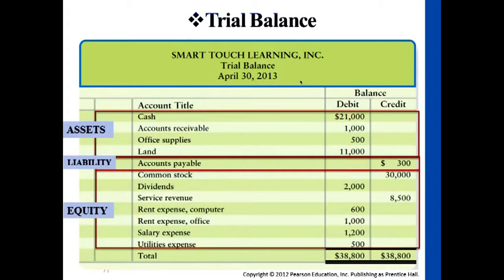Looking at the debit and credit columns: all assets will show their balances under the debit side, because assets have a normal balance on the left side — this is copied from the ledger to the trial balance. For accounts payable, it's the opposite: normal balance is on the credit side, so you see that balance under the credit column.